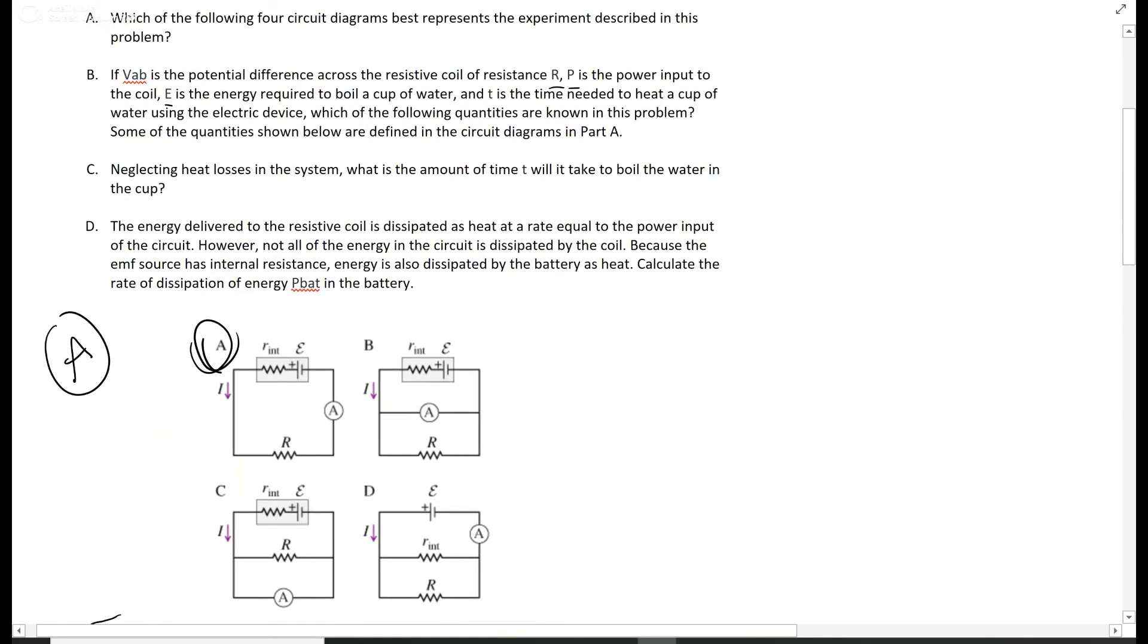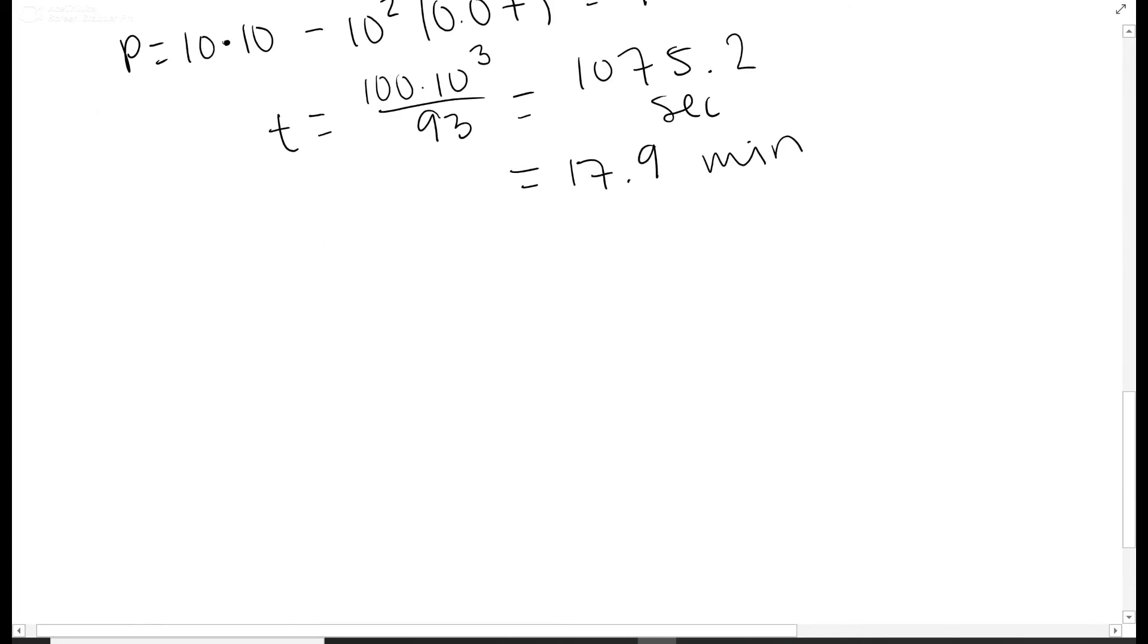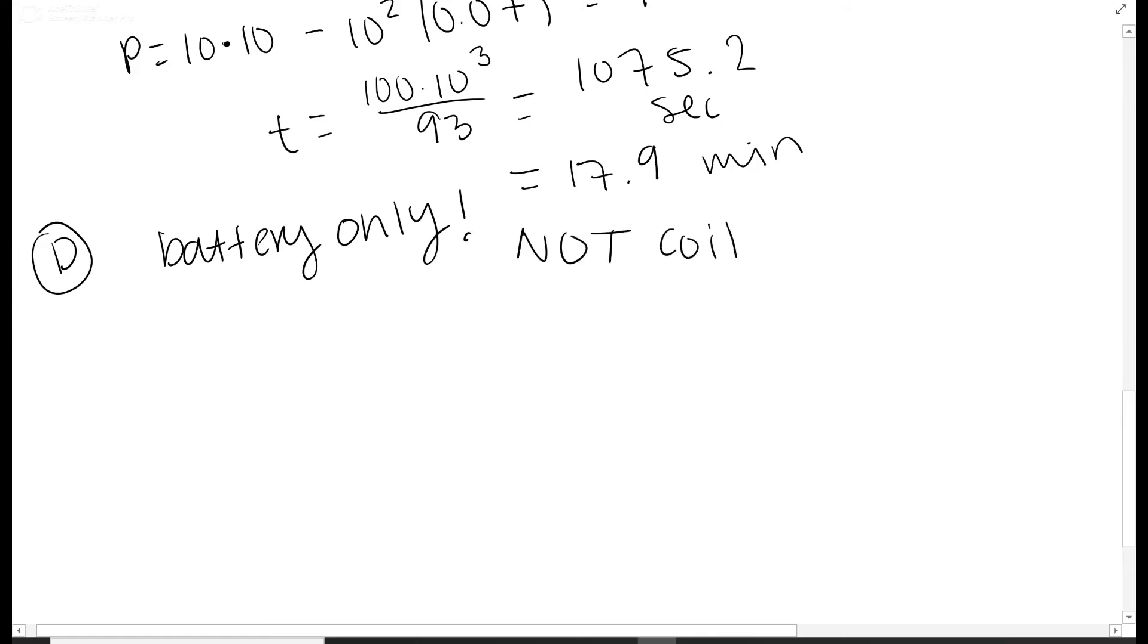For part D, it says not all the energy in the circuit is dissipated by the coil. Because the EMF has this internal resistance R_int, energy is also dissipated by the battery. Calculate the rate of dissipation energy heat in the battery. The thing to remember is it only wants the energy dissipated in the battery, battery only, not the coil.